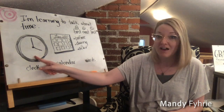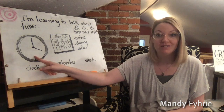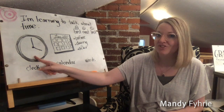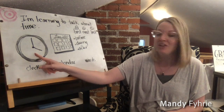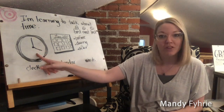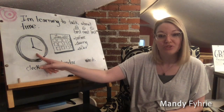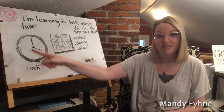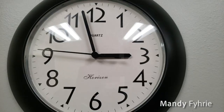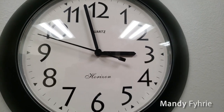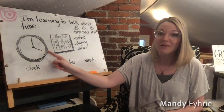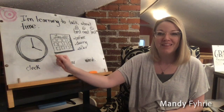I bet you use a clock a lot, especially when you're wondering what time it is — like, is it time for breakfast, is it time for lunch, is it time for dinner? You use minutes and hours to tell what time it is. The time of day might also be important. You might ask your family or guardians what time you were born — that is one way to measure time.